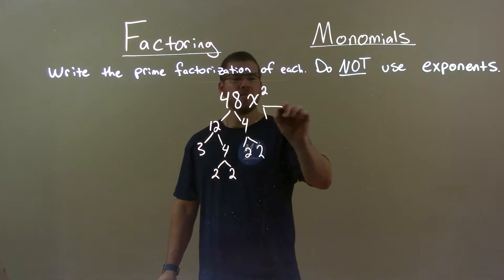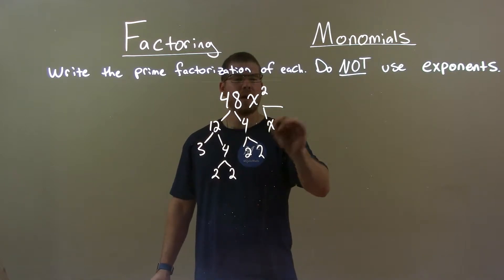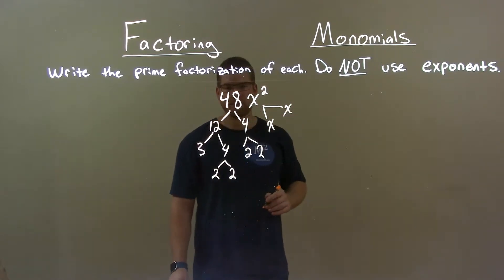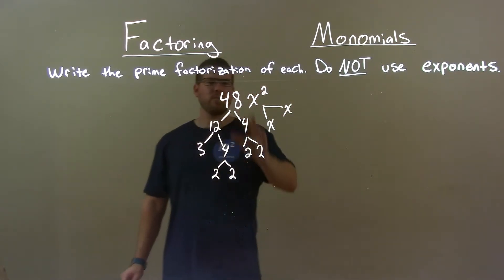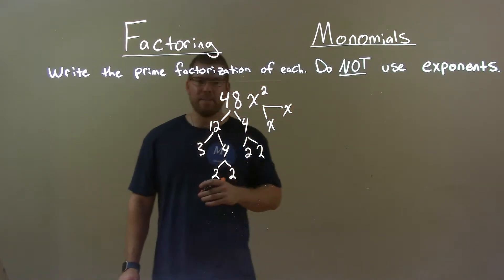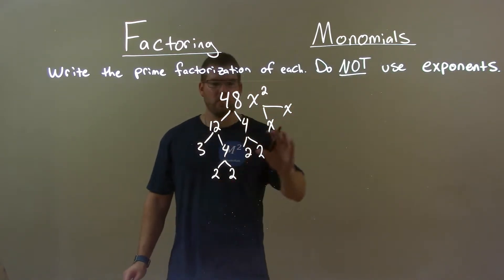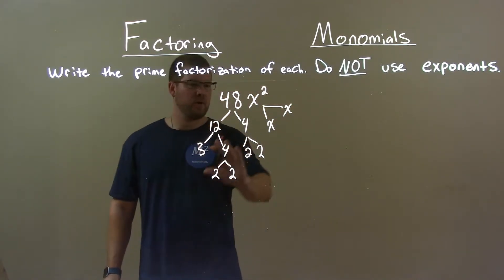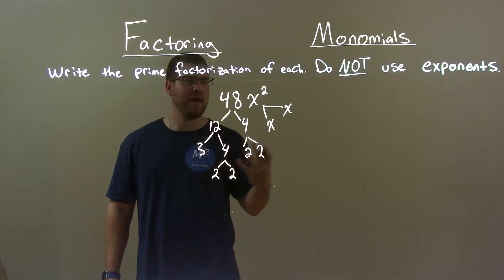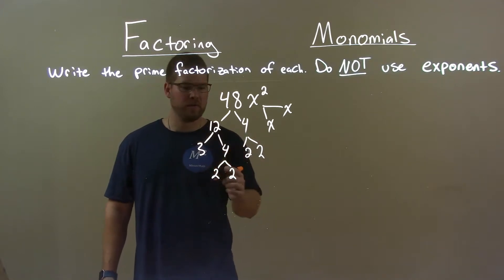x squared just breaks down to be x times x. Now we've broken down our number and our variable. So let's reorganize all this least to greatest first, and we'll get our answer.